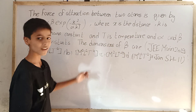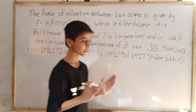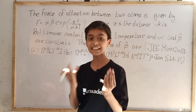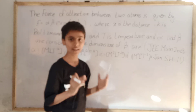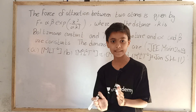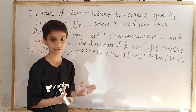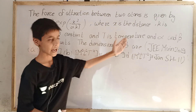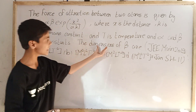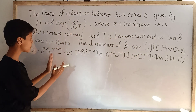Today I am going to solve a question based on dimensional formula. The question asks: the force of attraction between two atoms is given by F = alpha·beta·exp(−X² / (alpha·K·T)), where X is distance, K is Boltzmann constant, T is temperature, and alpha and beta are constants. The options for the dimensions of beta are: option A: MLT⁻².